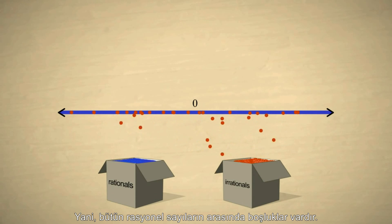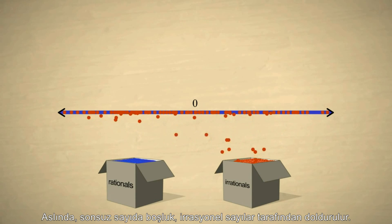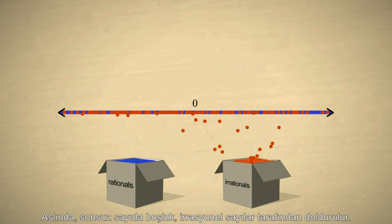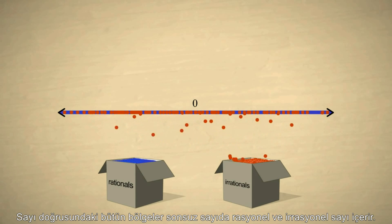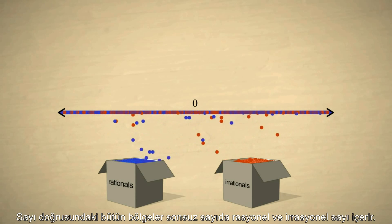Therefore there are gaps between every pair of rational numbers — in fact, an infinite number of gaps, which are filled by irrational numbers. Every region of the number line contains an infinite number of rational and irrational numbers.